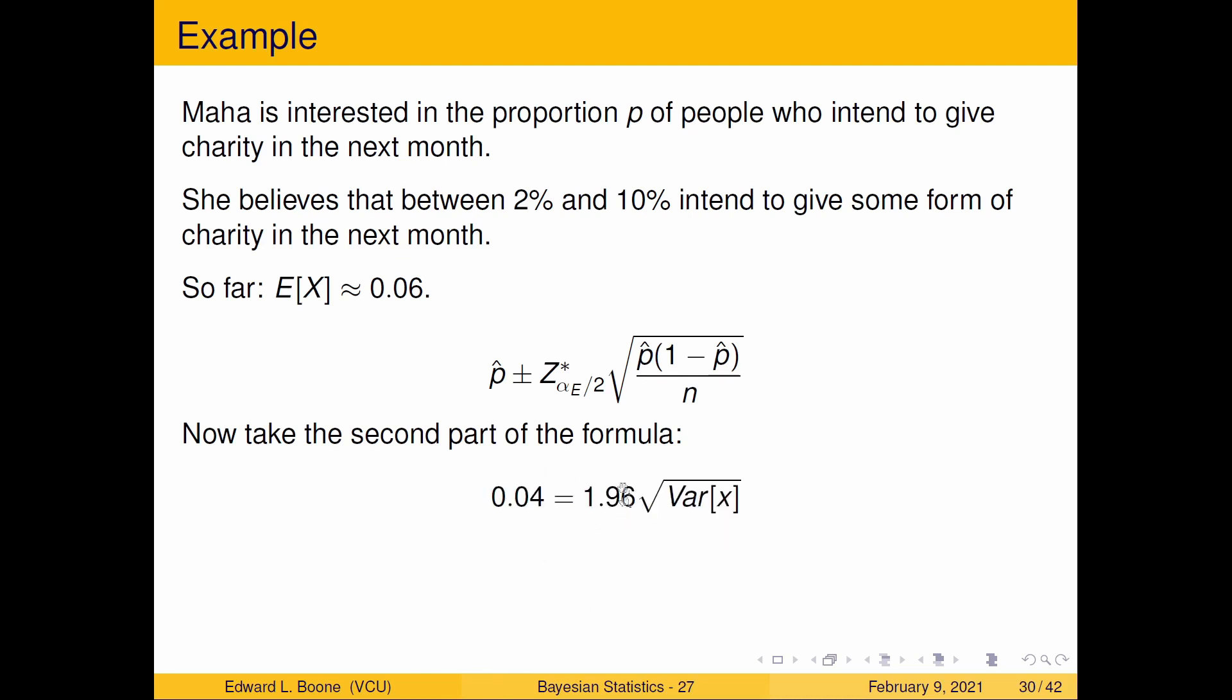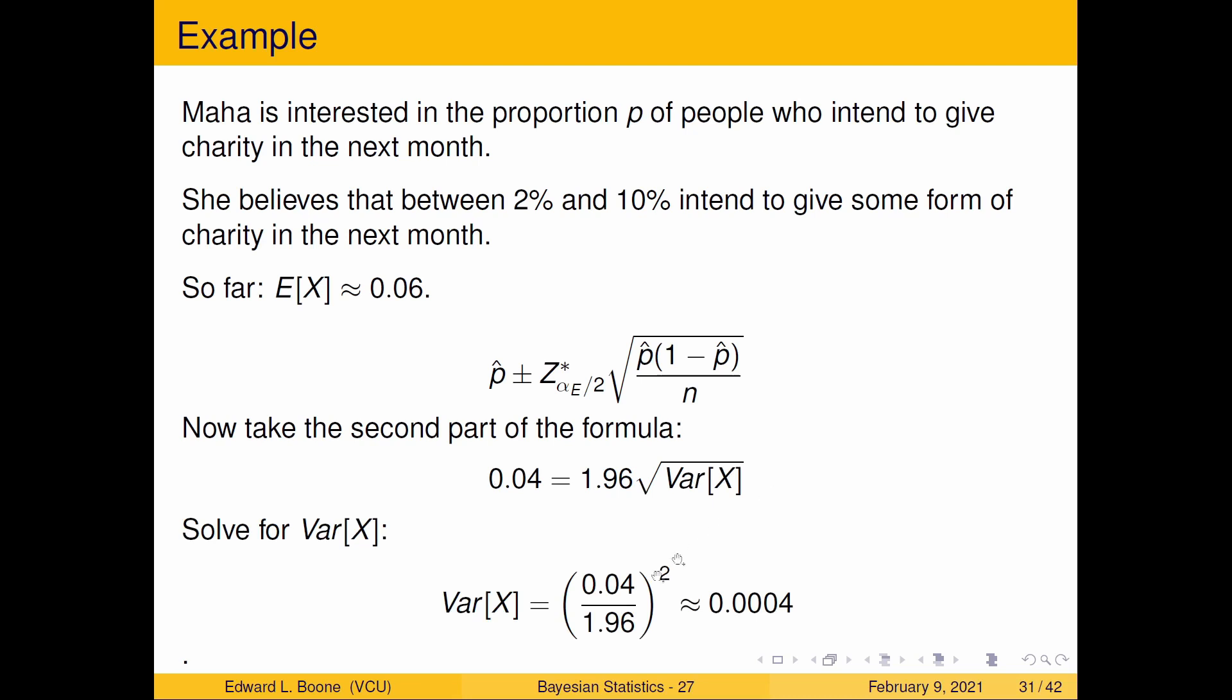We plug this in. Our z value, usually for a 95% confidence interval, is 1.96. And the variance is this piece here. So I just solve this and get the variance of x. So once I solve it, you can see here that I get 0.04 over 1.96 quantity squared, which is approximately 0.0004. Whew. That could be a little bit of work to do. But it's really not that hard. You just have to think through it. So we have an expected value, and we have a variance now.